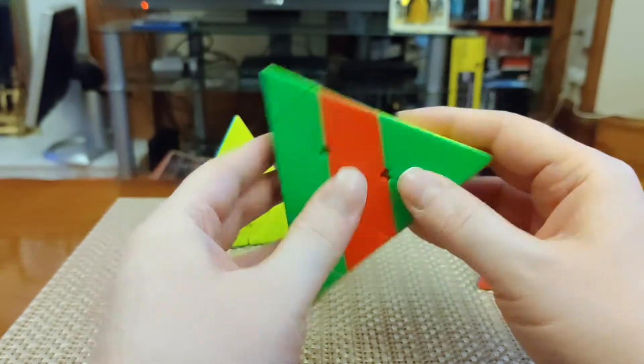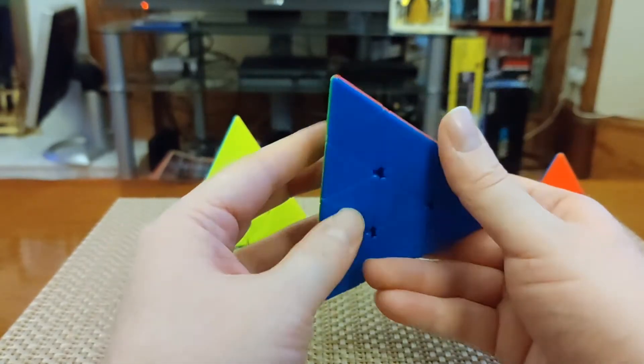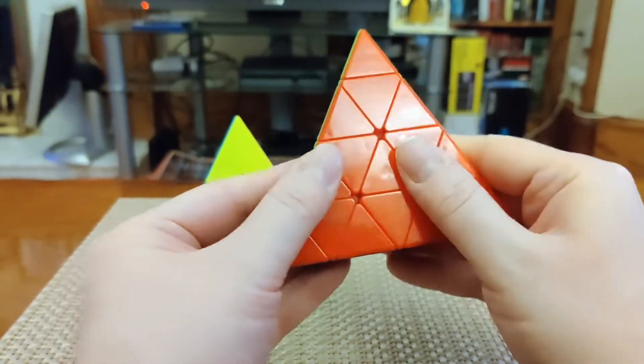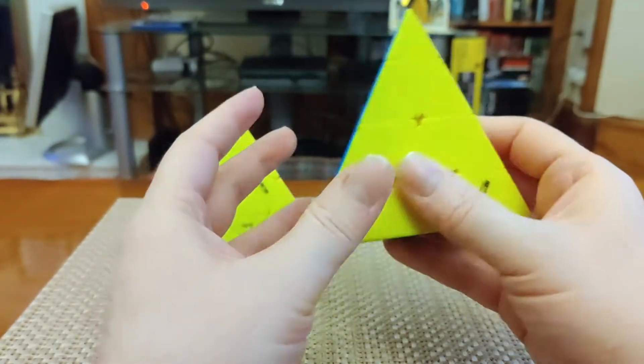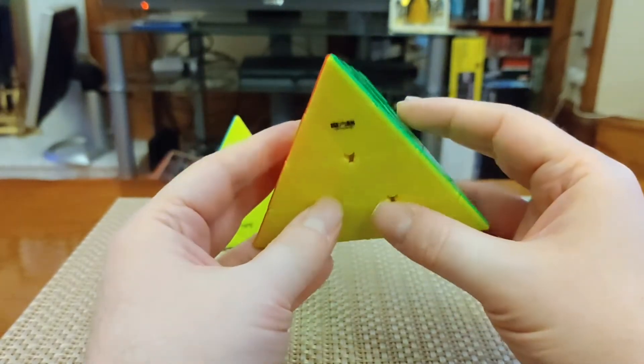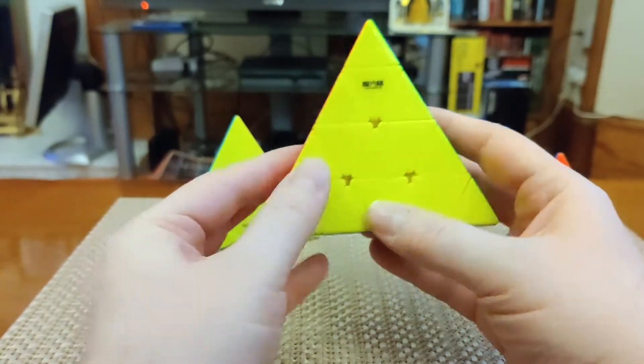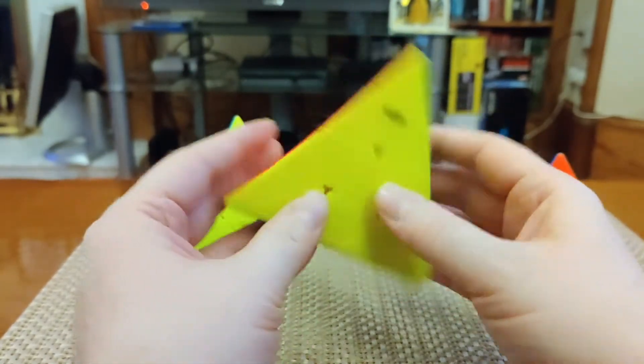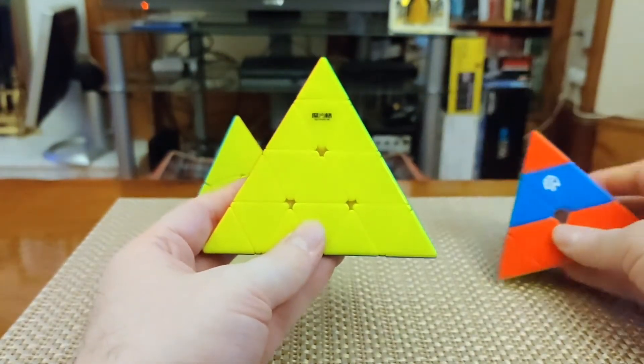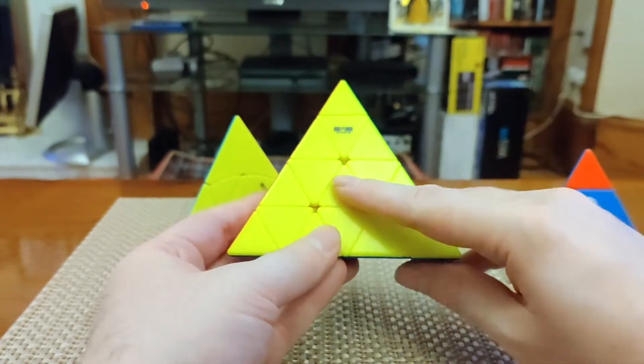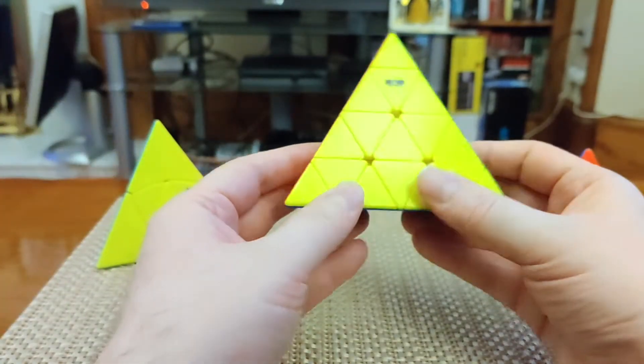There's not so many pieces that going piece by piece becomes tedious. Any way you choose to solve it, there's really not any parity to deal with. When you do a reduction solve, you can end up with the center swapped around in weird ways, but that's not really parity. You can easily get them back to place with a simple algorithm based on algorithms we already know from other puzzles.